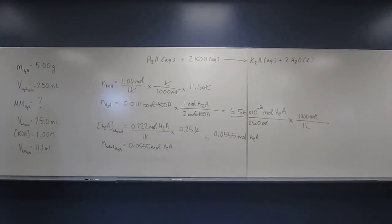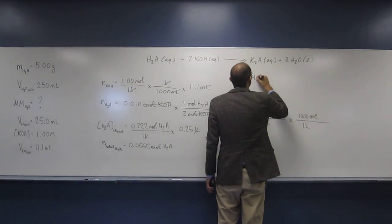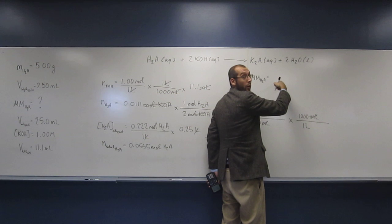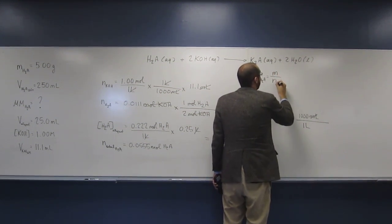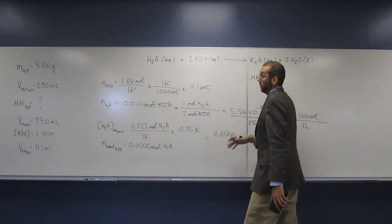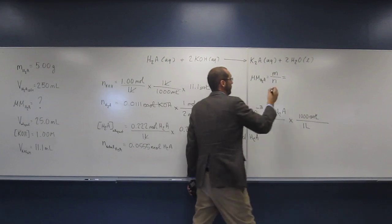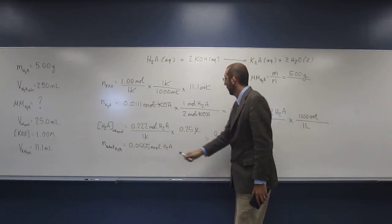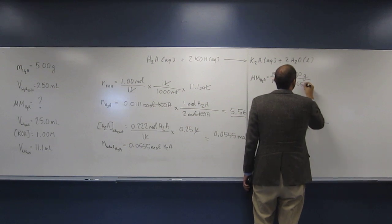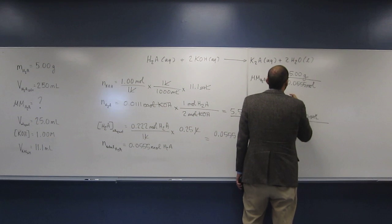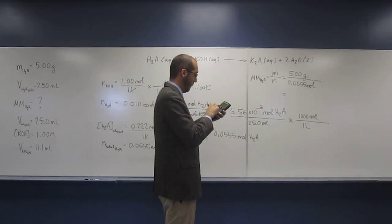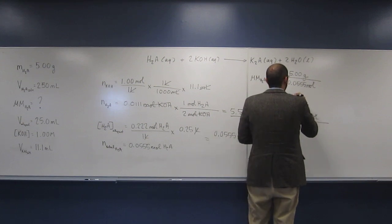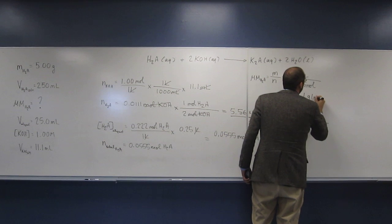So this is now the total number of moles of H2A, 0.0555 moles of H2A. But we want to figure out what's the molar mass of H2A. Remember, the molar mass is the mass per moles, so mass divided by number of moles. So what do we have? Do we have the mass? Yes. 5.0 grams divided by my number of moles here, 0.0555 moles. So 5 divided by that, and I get to three significant figures, the molar mass of my acid is 90.1 grams per mole.